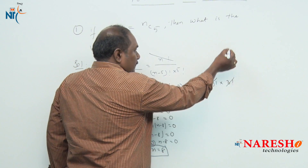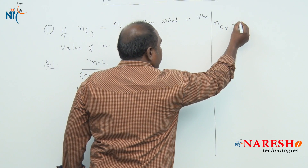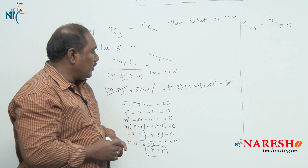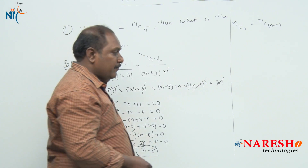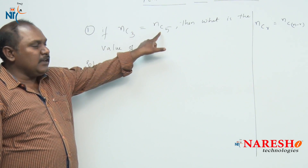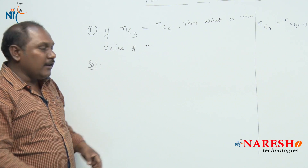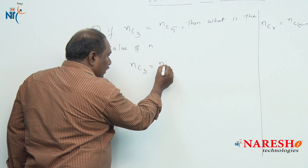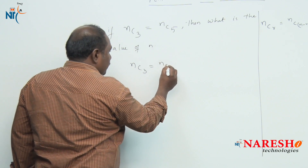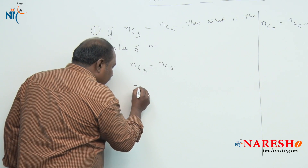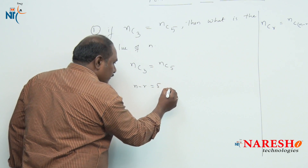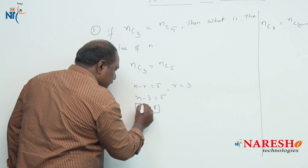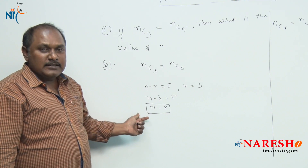In combinations we have a formula: nCr is also equal to nC(n−r). Both are different in meaning but equal in value. Using this point to solve the same problem: if nC3 = nC5, assume r = 3, then n−r must equal 5. So n−3 = 5, therefore n = 8. Using that simple point we can quickly find the value of n.